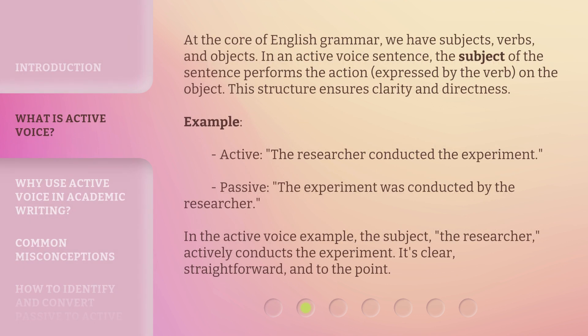At the core of English grammar, we have subjects, verbs, and objects. In an active voice sentence, the subject performs the action expressed by the verb on the object. This structure ensures clarity and directness. Example — Active: 'The researcher conducted the experiment.' Passive: 'The experiment was conducted by the researcher.' In the active voice example, the subject, the researcher, actively conducts the experiment. It's clear, straightforward, and to the point.